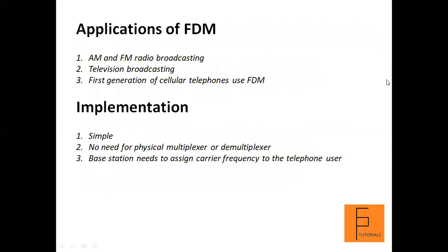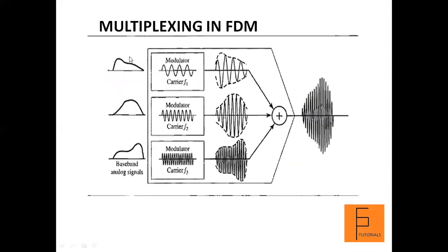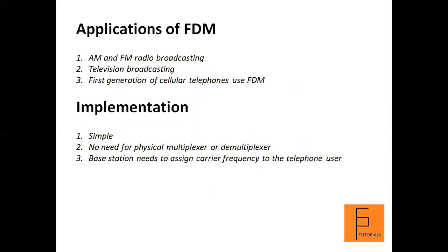FDM is used in AM and FM radio broadcasting, television broadcasting, and certain first-generation cellular telephones. The implementation of FDM is simple — you don't need a physical multiplexer or demultiplexer in most cases because air is used for transmission. Stations can coordinate to use different frequencies so there is no overlap. The base station assigns a carrier frequency to the telephone user so that modulation can take place, converting a lower-frequency original signal into a higher-frequency signal that can be transmitted over long ranges.